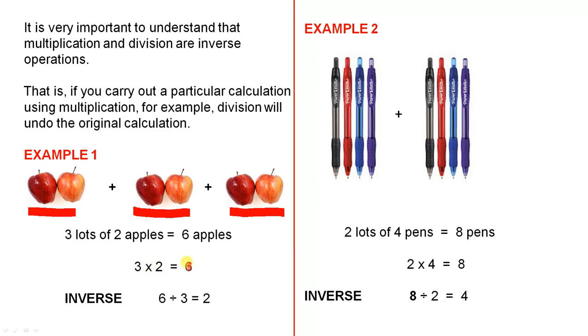Now, if we want to undo that operation, all we do is take the six and divide by three. So, you divide by the number of groups. There are three groups there. You divide by three, and that gives you two, and that's the original number of apples in each group. Can you see how division undoes what was done using multiplication?